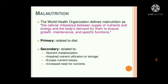In the case of malnutrition, the World Health Organization defines malnutrition as the cellular imbalance between the supply of nutrients and energy, and the body's demand for them to ensure growth, maintenance, and specific functions. Primary malnutrition may be related to the diet, and secondary malnutrition is related to malabsorption, impaired nutrient utilization or storage, excess nutrient losses in disease conditions, and increased need for nutrients.